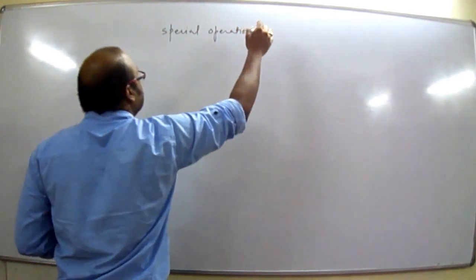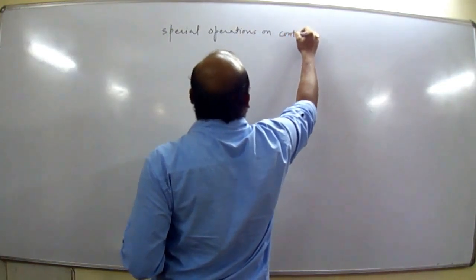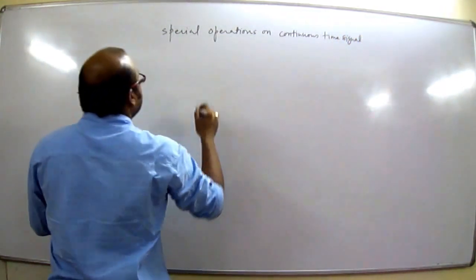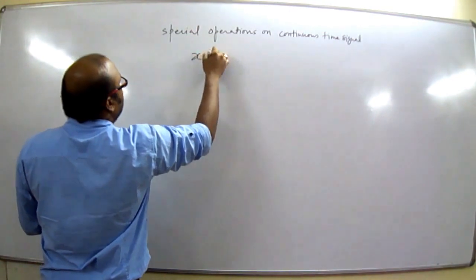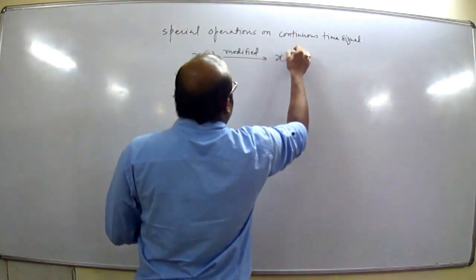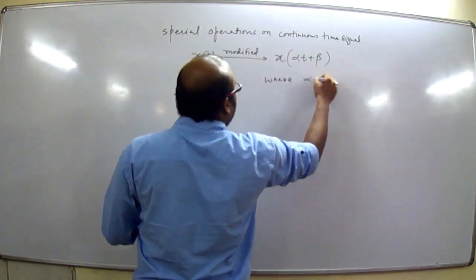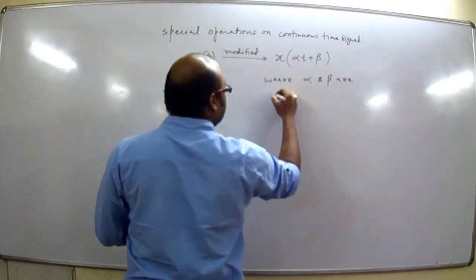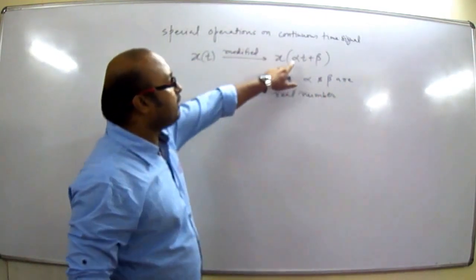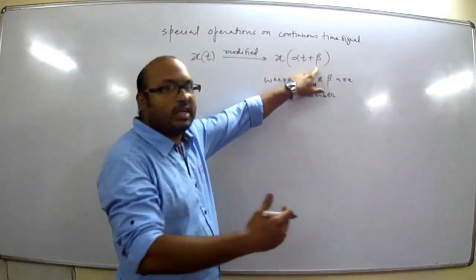In special operations on continuous time signals, X(T) is modified in the form of X(αT + β), where α and β are real numbers. Here α is responsible for scaling of the signal and β is responsible for the time shift of the signal.